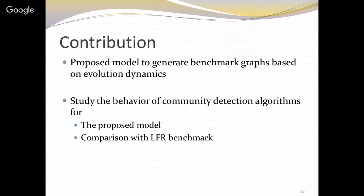This study is the result of seeking answers to these questions. We propose a model to generate benchmark graphs — graphs with community structure and ground truth communities — based on evolution dynamics. We studied whether such a model can generate networks with desired structural properties, and we compare the performance of community detection algorithms for the proposed model against the LFR benchmark. We didn't use the GN benchmark because it's very limited in size, and we wanted to test for larger networks of at least 1000 nodes.